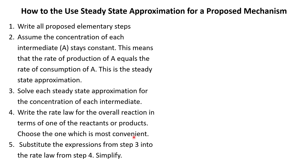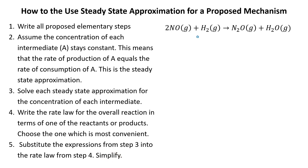We get a lot of flexibility with step four. Step five is we're going to substitute the expressions from step three — those expressions solving our steady state approximations for the concentration of the intermediate — and plug them into the rate law from step four and simplify.